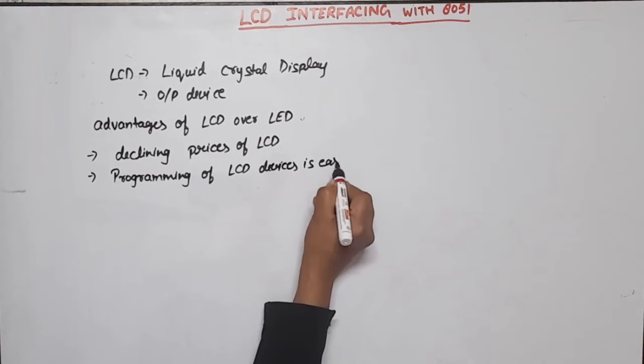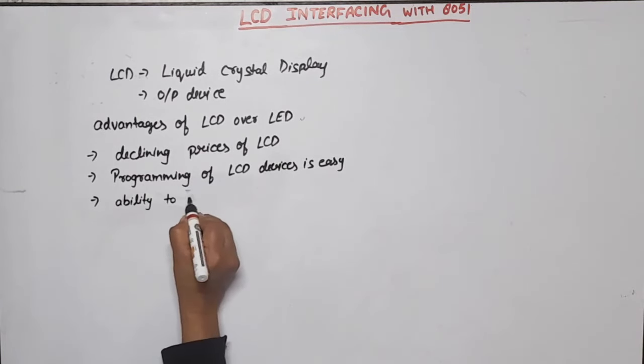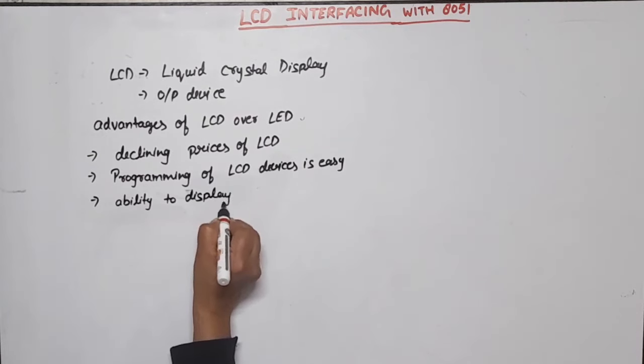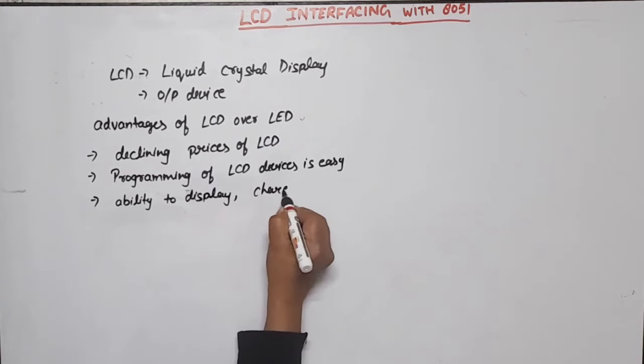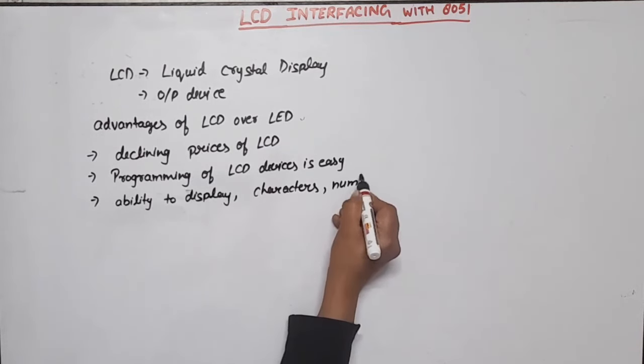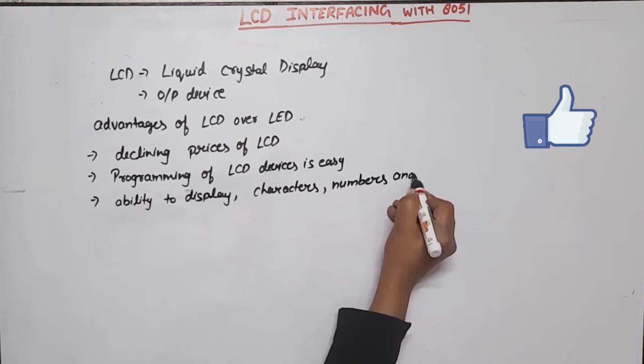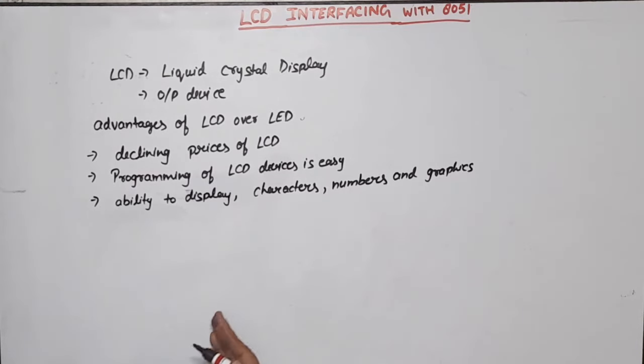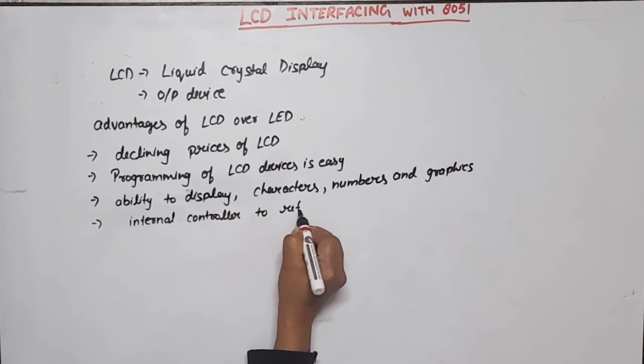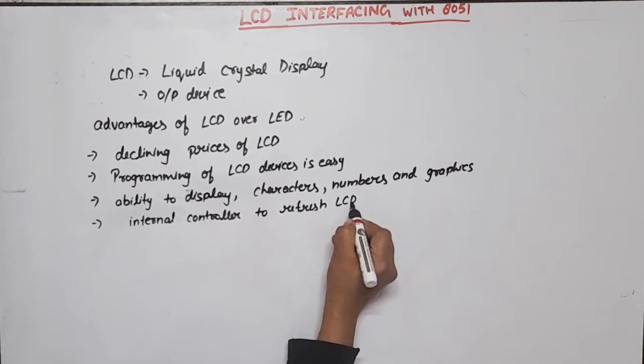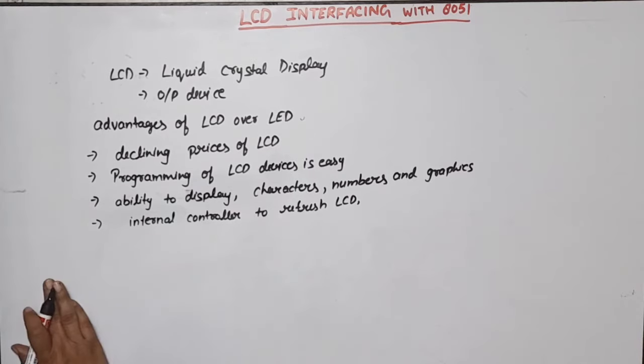Third is ability to display characters, numbers, and graphics. In comparison to LCD, LED can represent only numbers and few characters. And last point is in case of LCD there is an internal controller to refresh the LCD. But in case of LED, LED is refreshed by the CPU. So these are the advantages of LCD over LED.